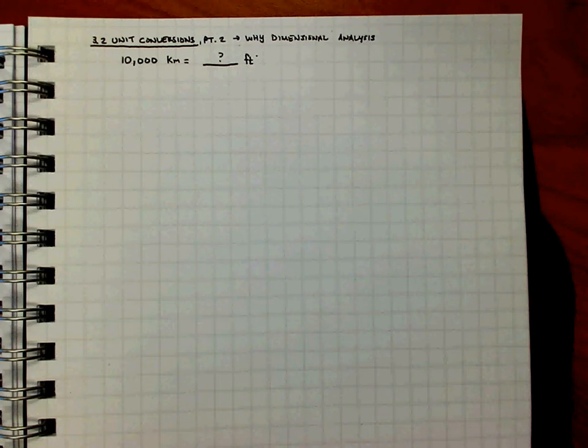Hi everybody. In this video, I'm going to walk into the second part of unit conversions, my second video in this series. The question here is why dimensional analysis? Why not use proportions for everything if cross-multiplying is that easy?